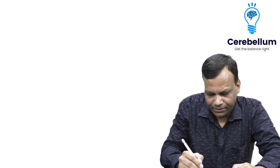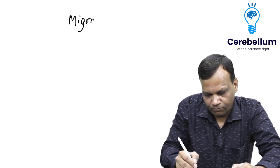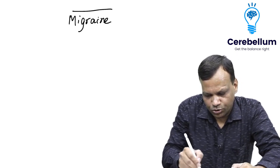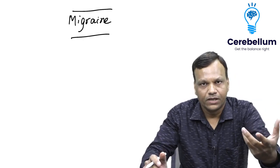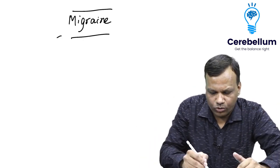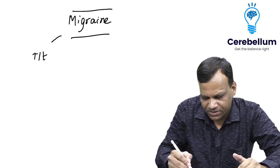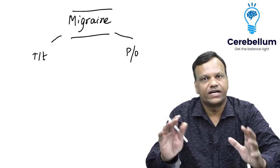My topic will be migraine. Migraine is unilateral pulsatile headache. For migraine there are two things: one, we need to treat the migraine. Second, if a person has frequent attacks we need to prevent the migraine.